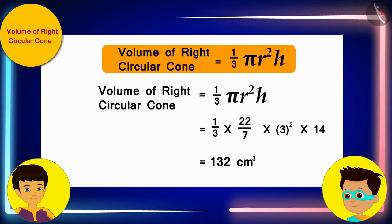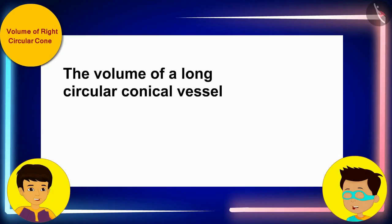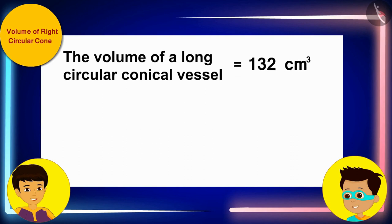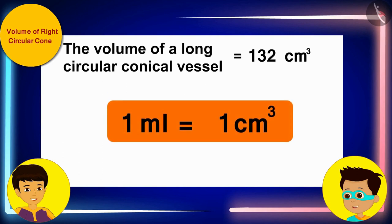And then, we will know the volume of this right conical vessel. The volume of a right circular conical vessel is 132 cm³ and we know that 1 ml is equal to 1 cm³.